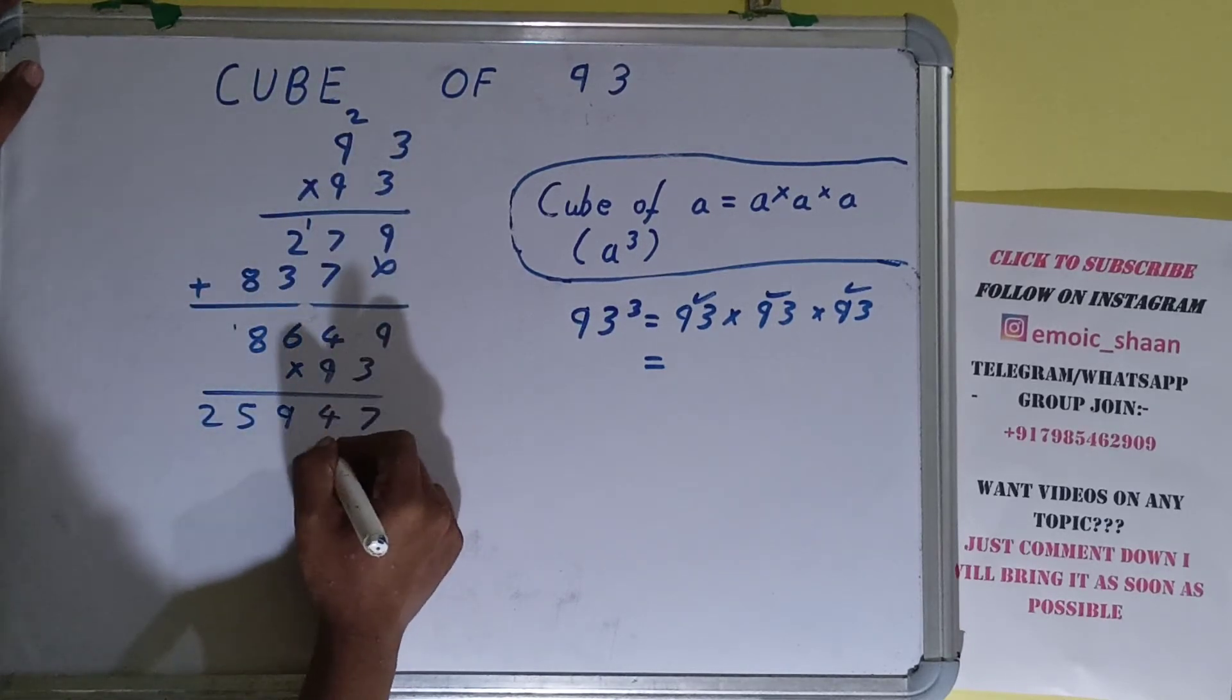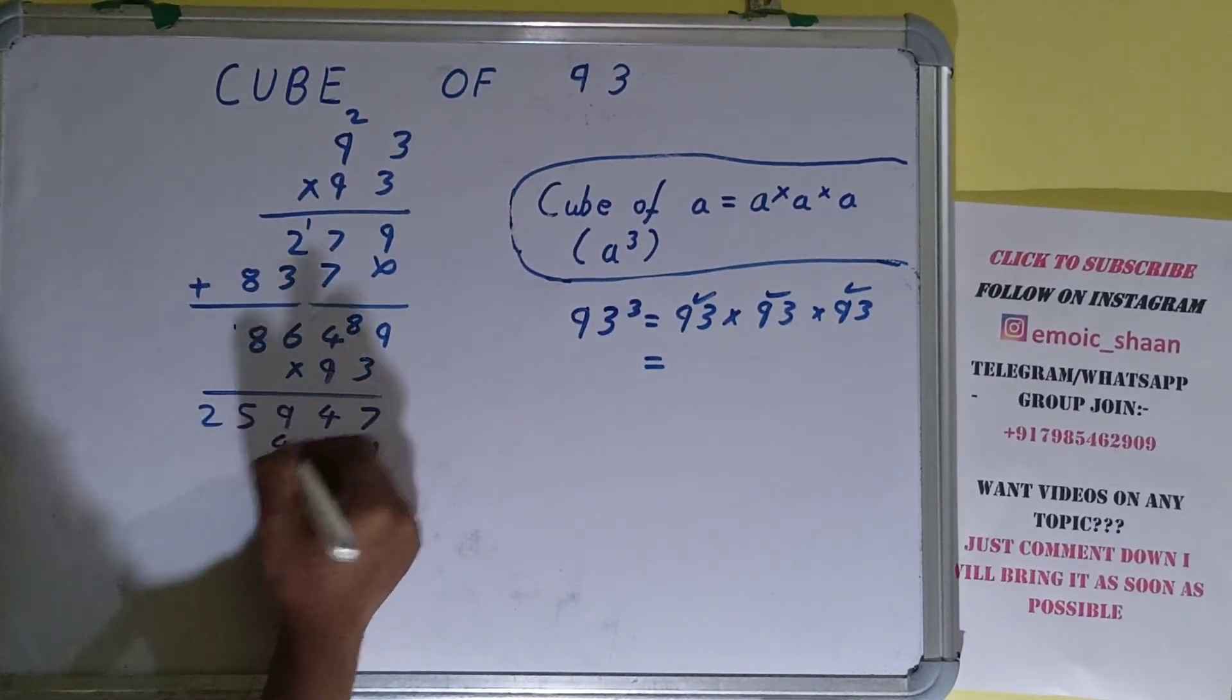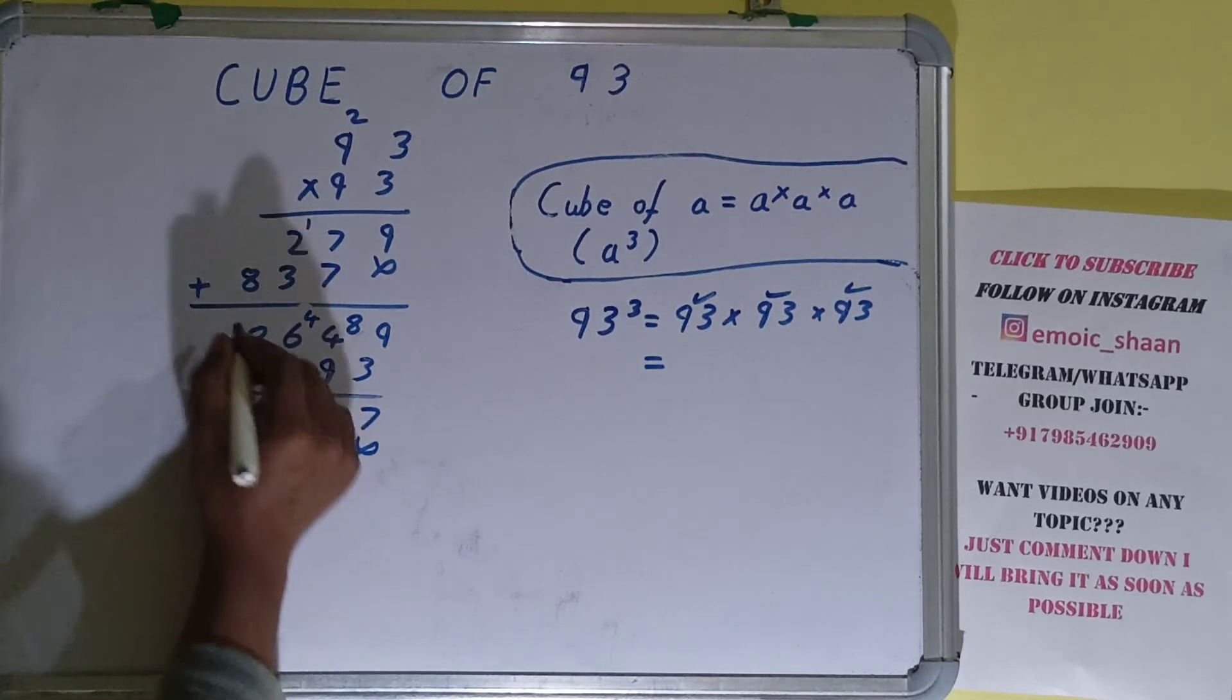Now with this 9, 9×9 is 81, 8 carry. 9×4 is 36 plus 8 is 44, 4 carry. 6×9 is 54 plus 4 is 58, 5 carry.